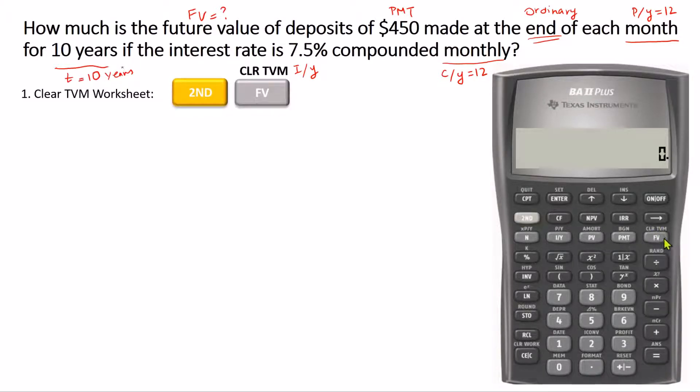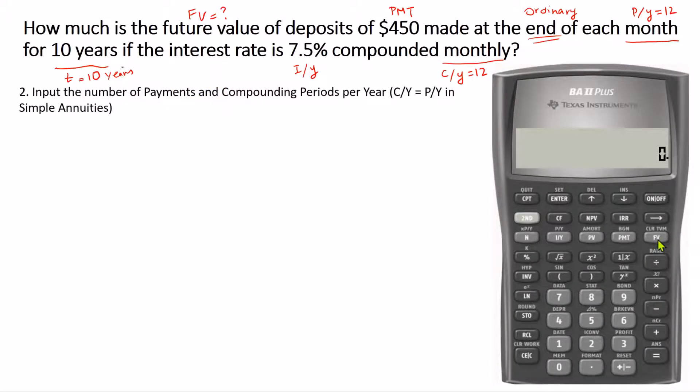Now we start entering the other values. We begin by entering number of payments per year and number of compounding periods per year. In order to do that, we press second and press I key to go to P/Y C/Y worksheet.